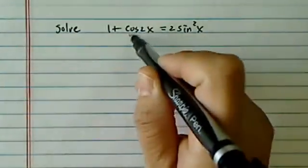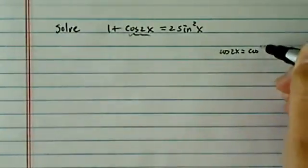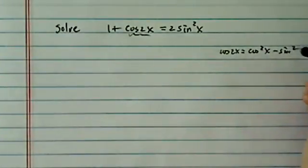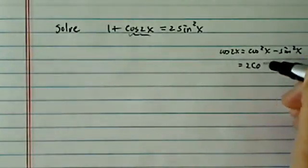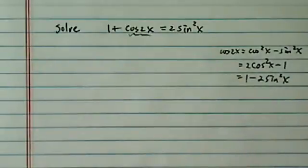I have an interesting trig function to solve here. First thing to do is notice that cosine 2x has two forms, well actually three forms. Cosine squared x minus sine squared x, also equal to 2 cosine²x minus 1, and 1 minus 2 sine²x.